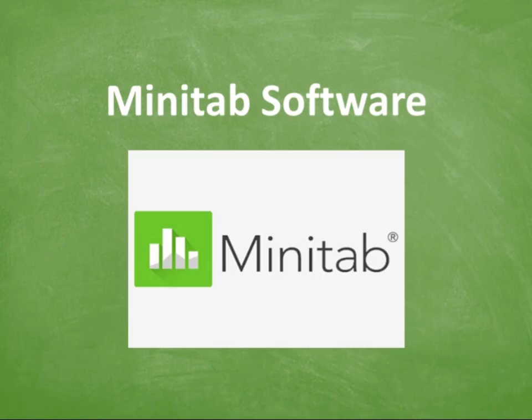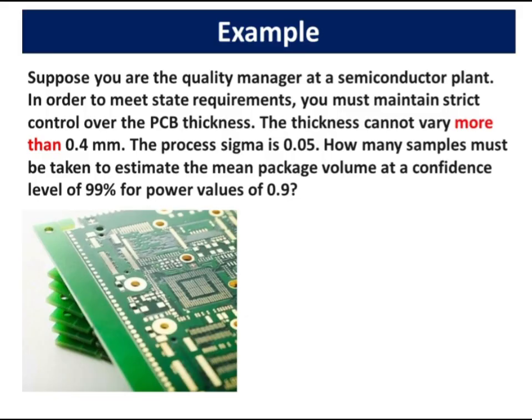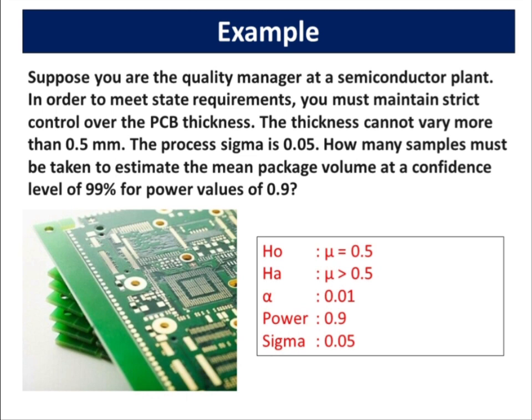We will learn how to calculate sample size for one sample t-test using Minitab software. Suppose you are the quality manager at a semiconductor plant. In order to meet state requirements, you must maintain strict control over the PCB thickness. The thickness cannot vary more than 0.5 millimeters. The process sigma is 0.05. How many samples must be taken to estimate the mean package volume at a confidence level of 99% for power values of 0.9? The null hypothesis is the mean thickness is 0.5, while the alternate hypothesis is greater than 0.5. The significance level is 0.01.